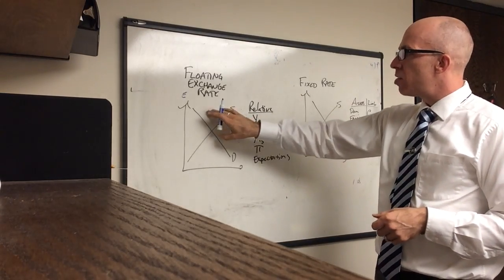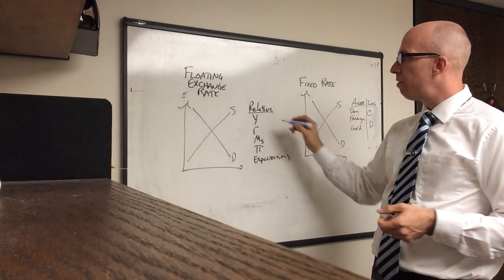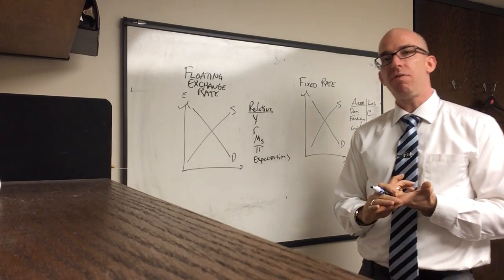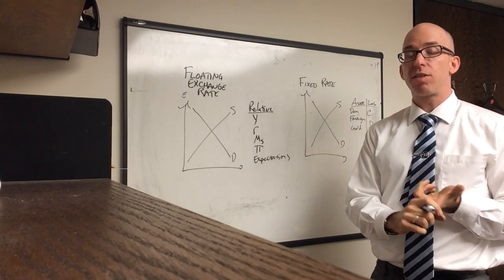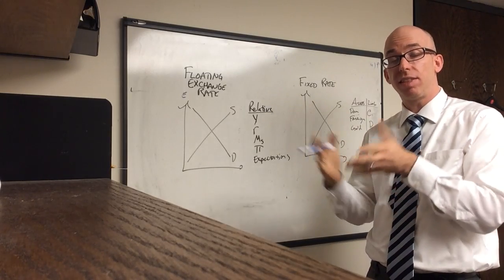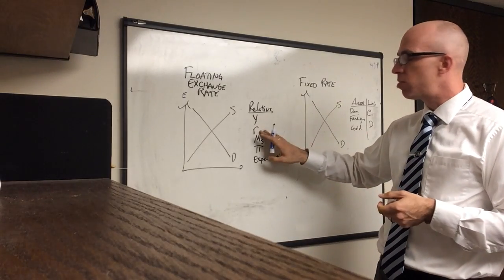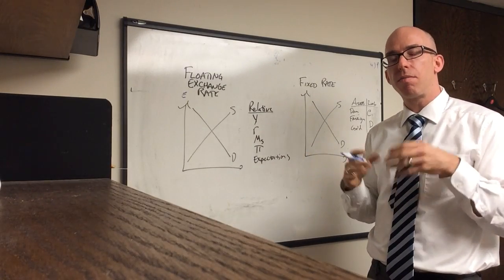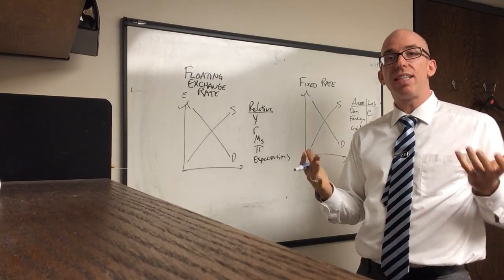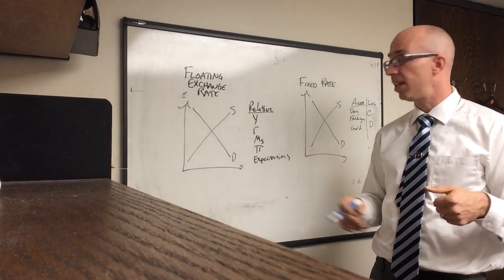So again, currencies appreciate if relative to the other country GDP growth is faster. So one country could have really fast growth, but if one country has extremely fast growth, it's actually relatively faster. Interest rates, again, you can look at the interest rate compared to the other countries. So one major thing that happens is if the US raises interest rates, the dollar will rise almost immediately.